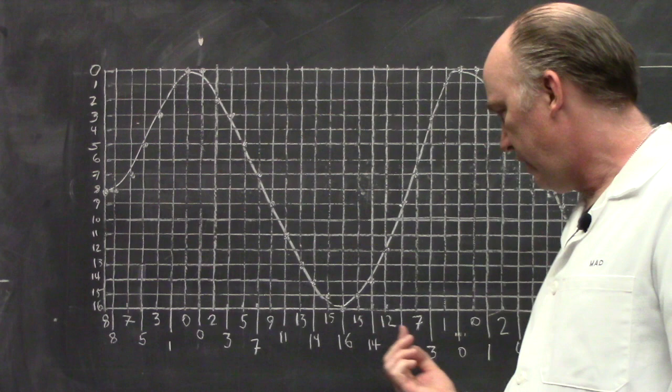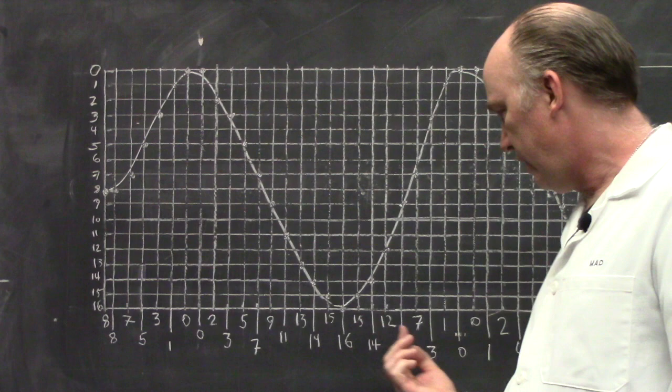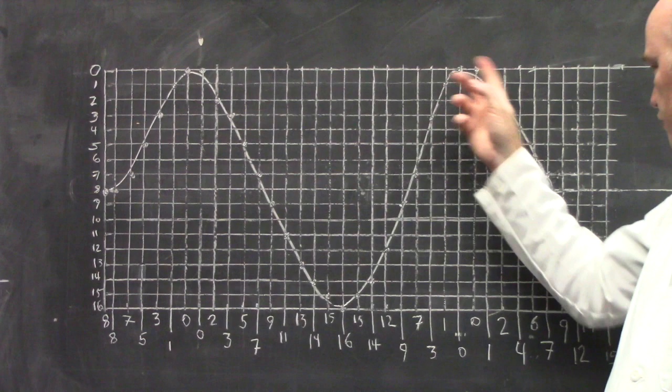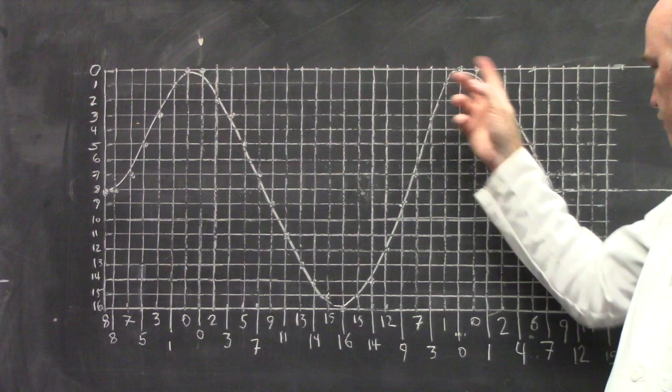I have drawn my grid of one-inch squares, I have labeled this axis 0 through 16, and I have gone across and recorded the position of our wave that we're trying to record as a series of numbers down here on the bottom.